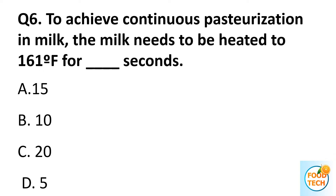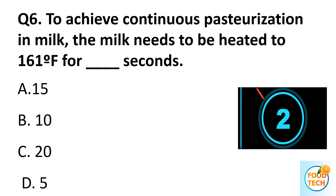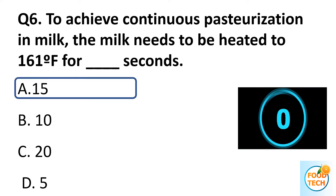Question 6. To achieve continuous pasteurization in milk, the milk needs to be heated to 161 Fahrenheit for dash seconds. A. 50. B. 10. C. 20. D. 5. Answer A. 50.